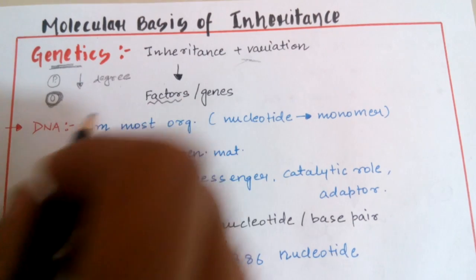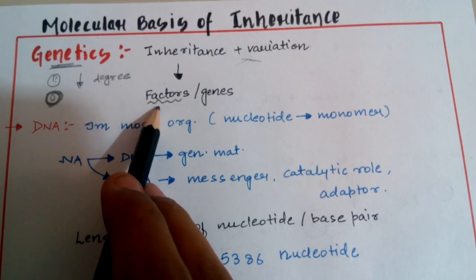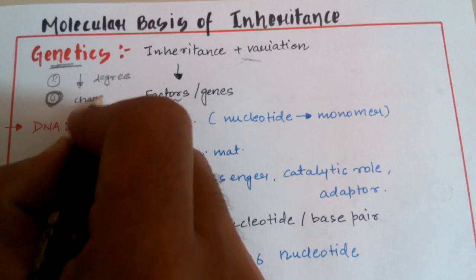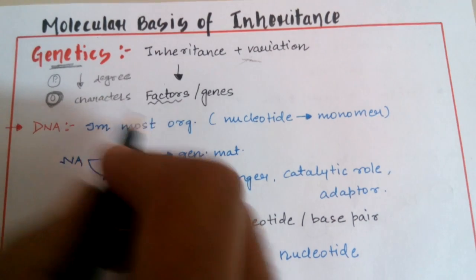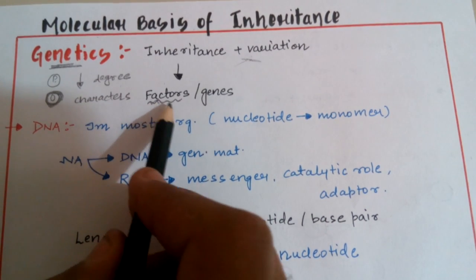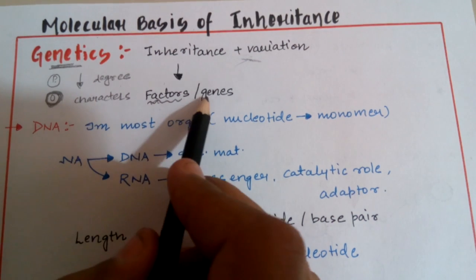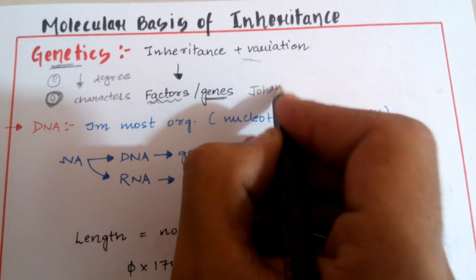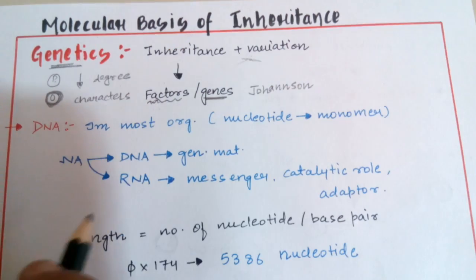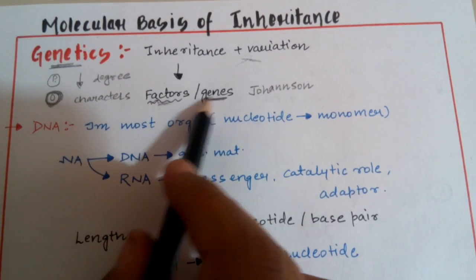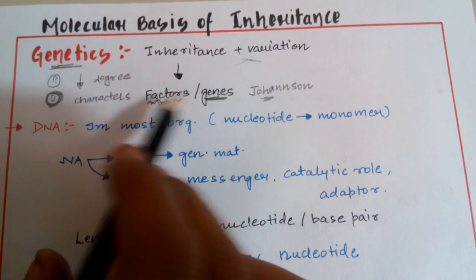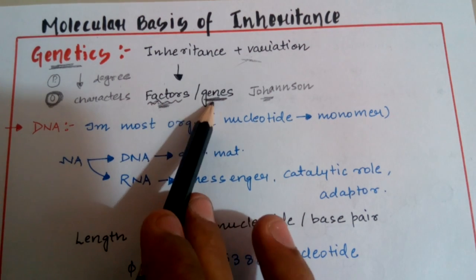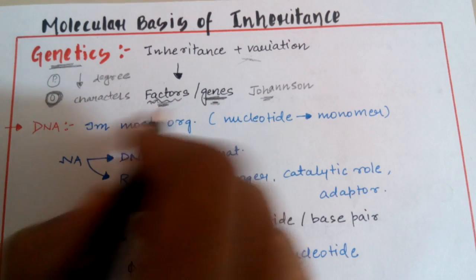According to Mendel — Gregor Johann Mendel, who is the father of genetics — there are some factors which are transmitted from parents to offspring, passing on the characters. These factors are responsible for transmission of characters from parents to offspring, which are now called genes. The term 'gene' was given by Johansson, while Mendel used the word 'factor'.